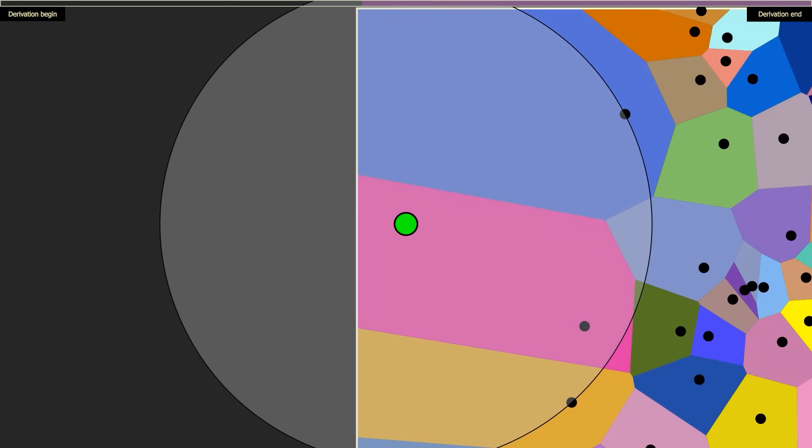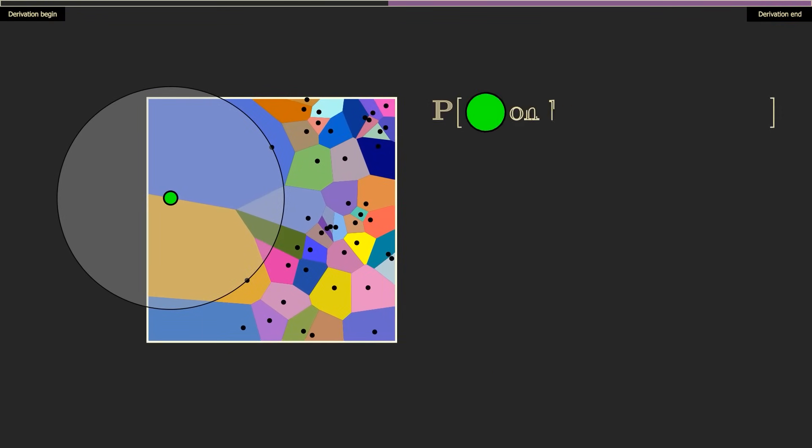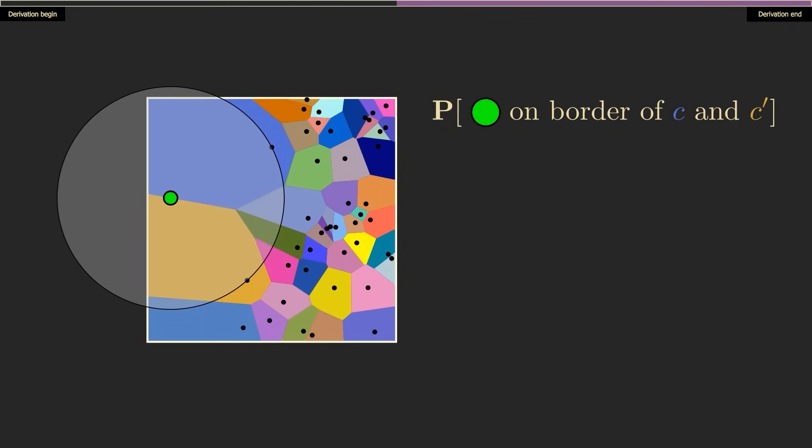Finding the average length of this border will be helpful in finding the average perimeter of a cell, and to do that, it'll be useful to know the probability that the point is included in the border, or that no other site lies within this circle.